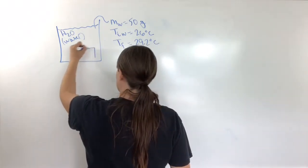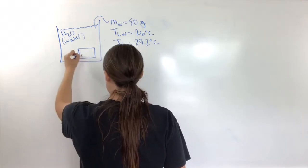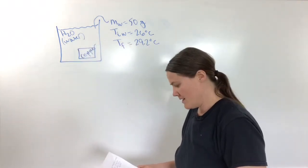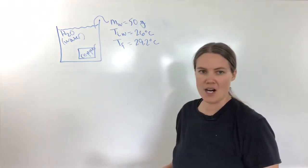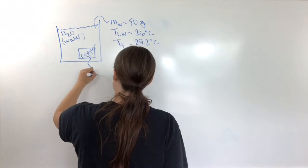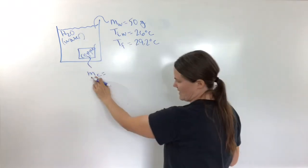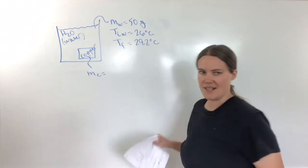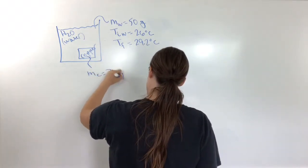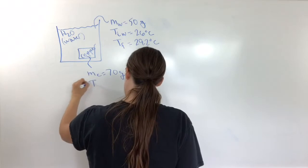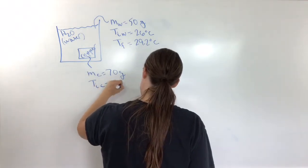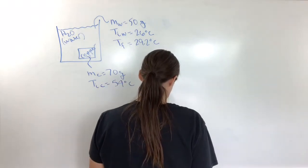We're putting a piece of copper in here — copper is at a higher temperature than the water, so we're cooling off the copper in the water. The mass of the copper, using subscript C to indicate copper, is equal to 70 grams. The initial temperature of the copper is 54 degrees Celsius.